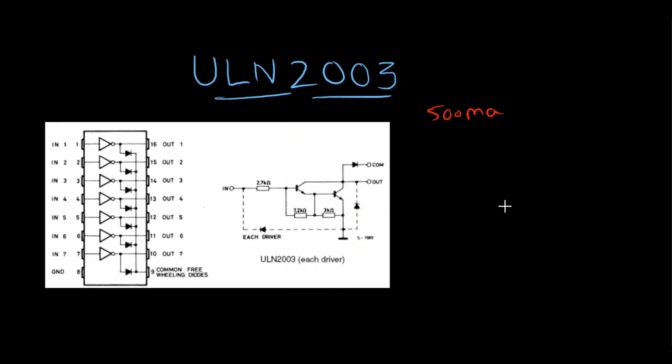For easy understanding, I'm just simplifying this circuit. Let's consider that each driver is just a transistor whose emitter is already connected to ground, which is pin number eight. You can see here in the IC, pin number eight is ground. The base of the transistor is the input.